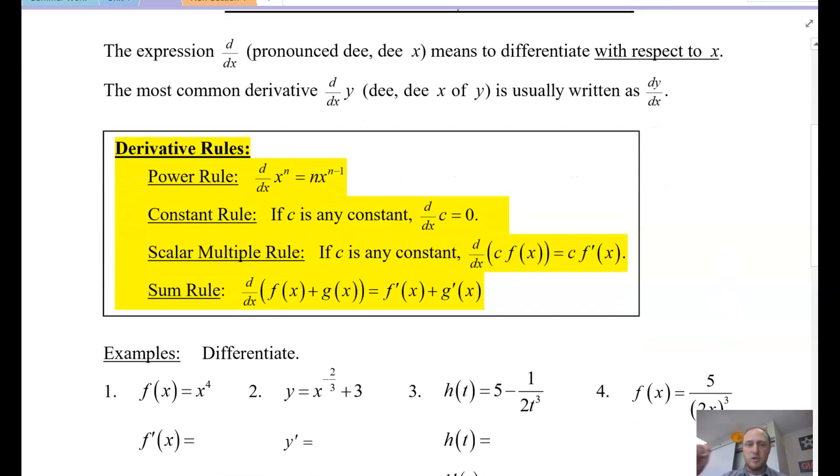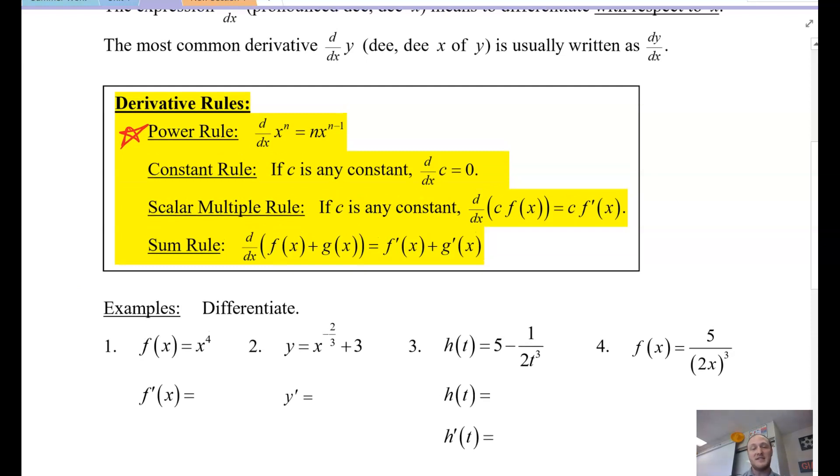So here are the derivative rules. Super important. And this is probably the one that you will use the most. It is the power rule. All the power rule says is if I want to take a derivative of a term, I multiply by the power, hence the term power rule, and then I drop that power by 1. The constant rule says if c is a constant and you want to take a derivative of it, it's 0. A scalar multiple rule, if c is a constant and you take the derivative of c times f(x), then you have the derivative of your function and you just multiply by c. And last, we have the sum rule. If I want to take the derivative of two things that are being added together, then you just take the derivative of each piece individually and you can add those together.